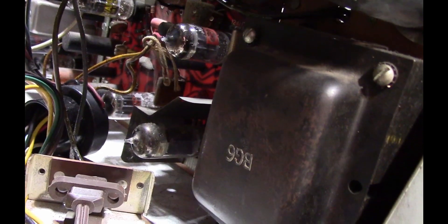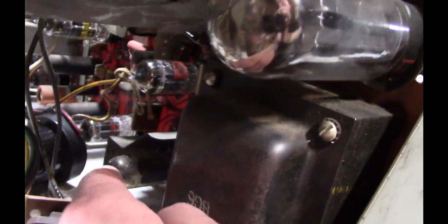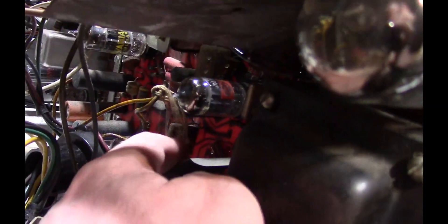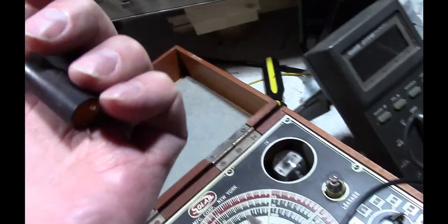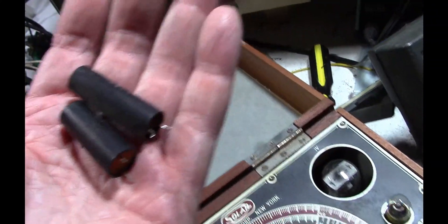Right now, I'm working in the area around the vertical output tube. This guy right down here. Particularly, there were three caps right above it. Pulled out these two, and they actually tested good, but I went ahead and replaced them anyways.